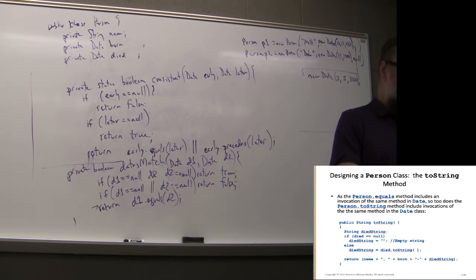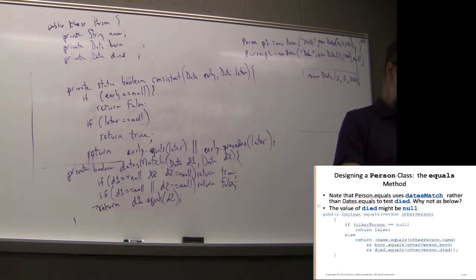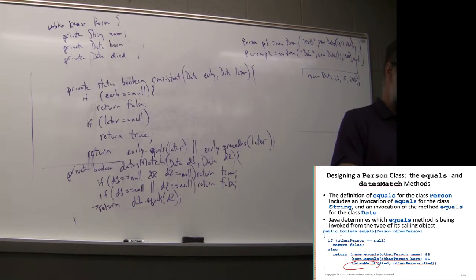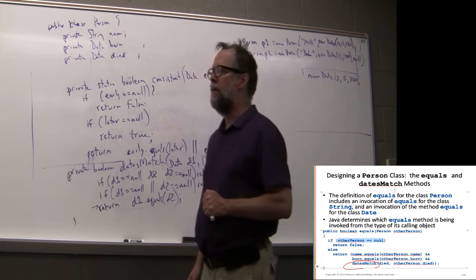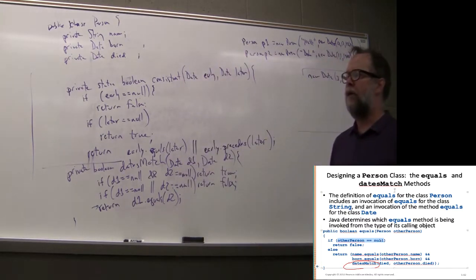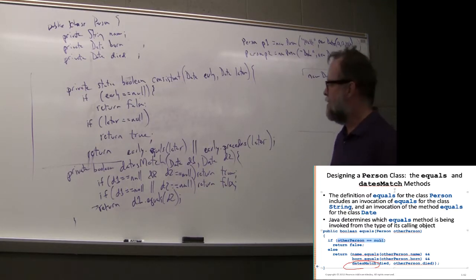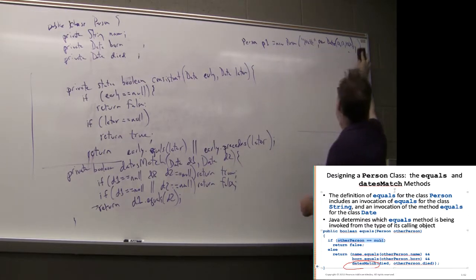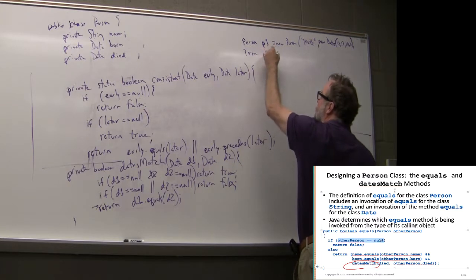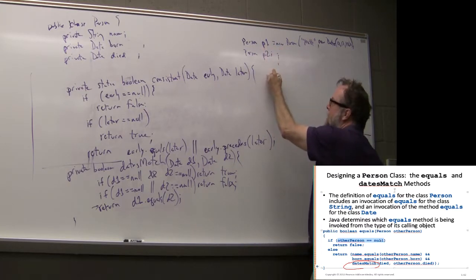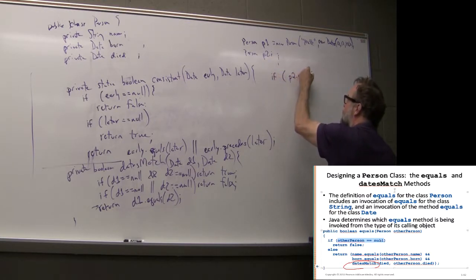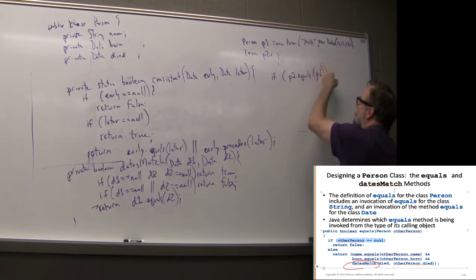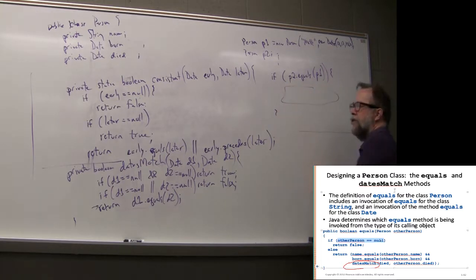There's also a null check at the start of equals — if the parameter is null, return false. Consider: if P2 is null and you call P1.equals(P2), then inside equals, 'otherPerson' is null. Without that check, the first line that tries to dereference otherPerson with the dot operator would throw a NullPointerException. So every time you write an equals method, first check that the other object is not null.